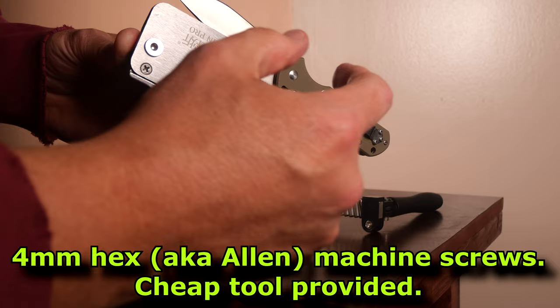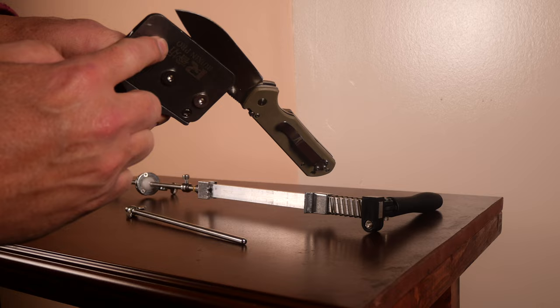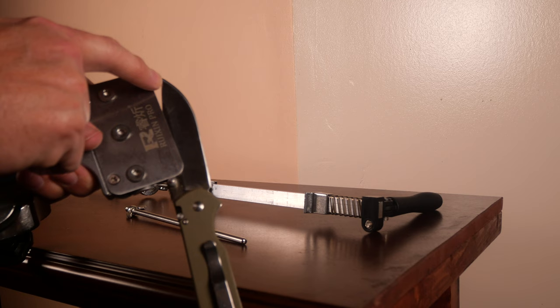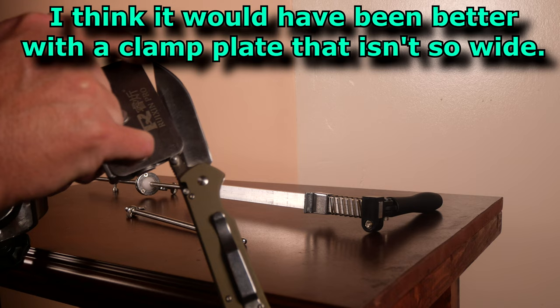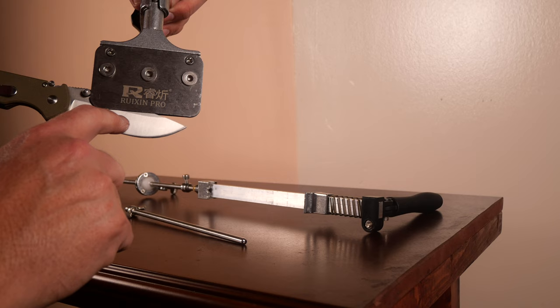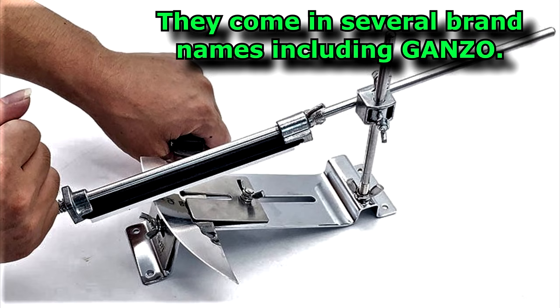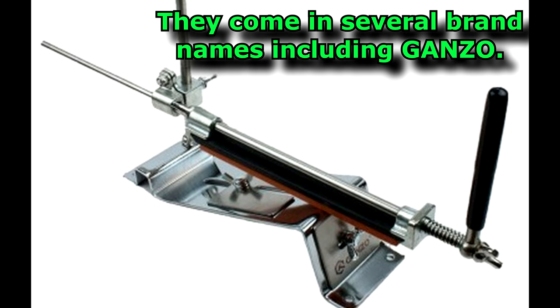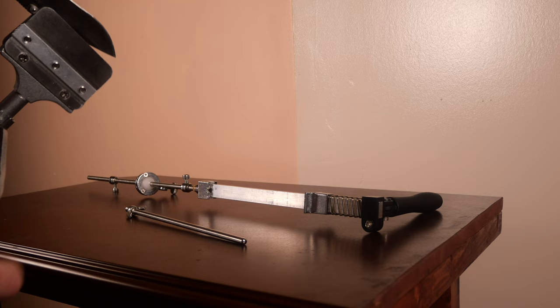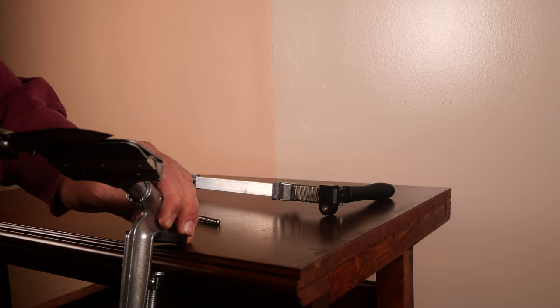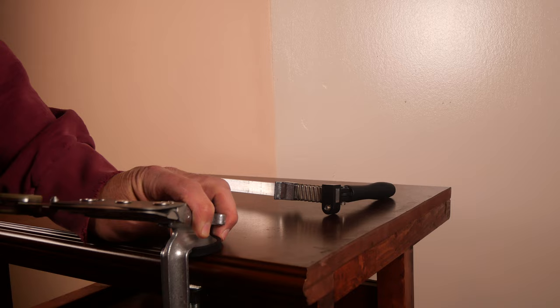It's got a clamp here with these two steel plates and those squeezed together using three screws. Those are four millimeter screws. And so you tighten those down to hold it. Now, before you get too far, I pronounced that Ruxin, R-U-I-X-I-N. So this is the Ruxin Pro. They've got another Ruxin Pro, this odd tabletop model thing, which I've had one of, and it's pure garbage. Don't get that Ruxin Pro. But this Ruxin Pro is okay.